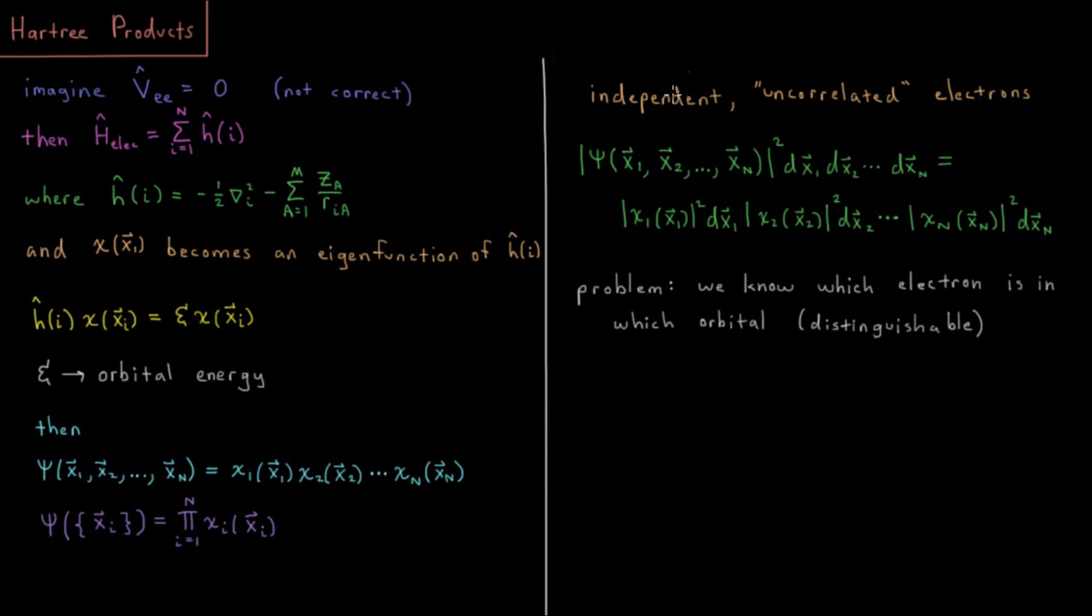In such a situation, what we would have is a set of independent, uncorrelated electrons. They're independent because there's no interaction between them, and we can factor the Hamiltonian into this separable sum. And they're uncorrelated because the motions of one don't affect the motions of another.